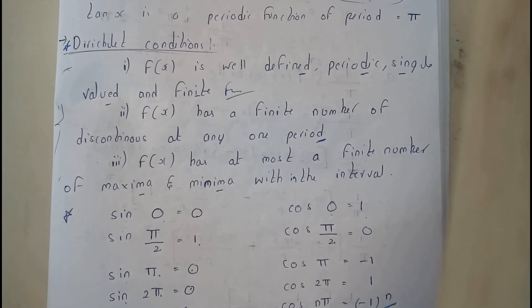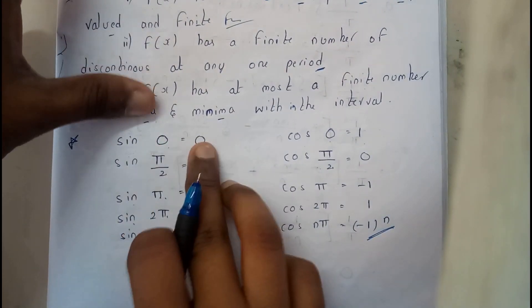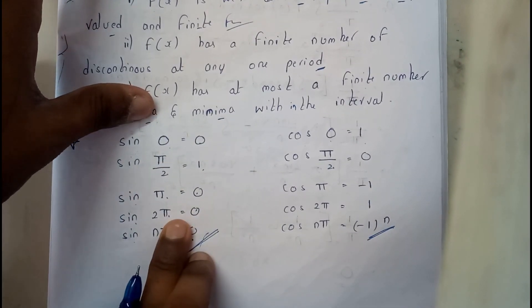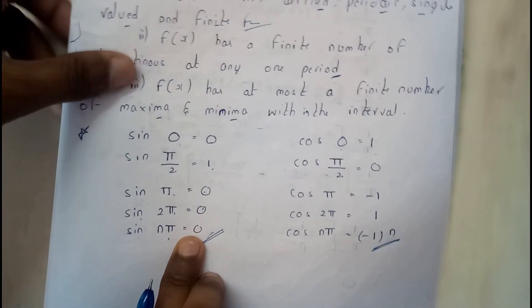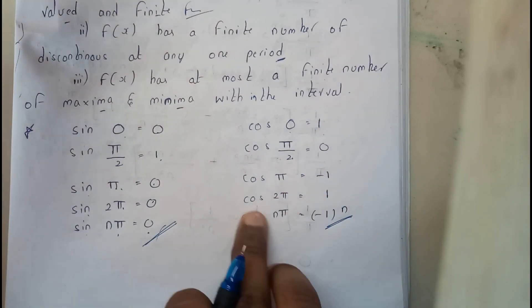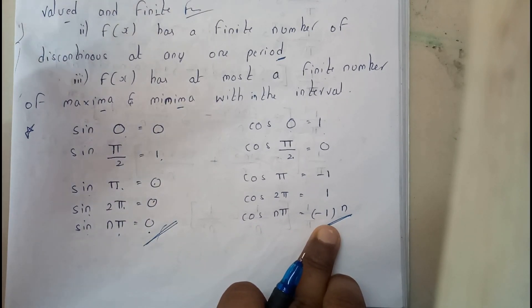Now let us go through some basic values which you should learn. sin(0) = 0, sin(π/2) = 1, sin(π) = 0, sin(2π) = 0, sin(nπ) = 0. cos(0) = 1, cos(π/2) = 0, cos(π) = -1, cos(2π) = 1, cos(nπ) = (-1)ⁿ.